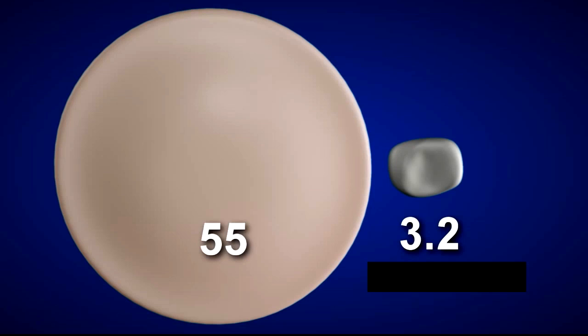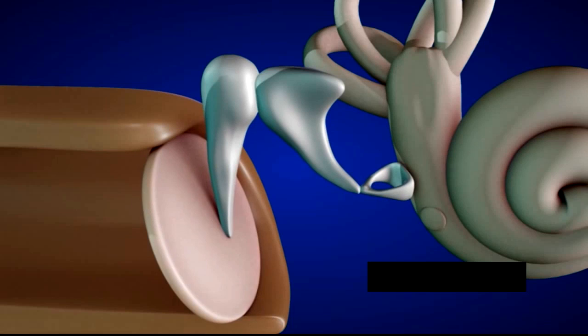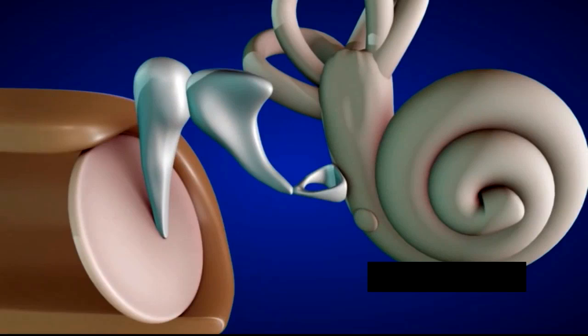This amplified leverage is needed as the stapes needs to cause waves within the liquid inside the cochlea, which requires more force than what is provided from the initial vibration. The cochlea is described as the most complicated part of the ear and is far easier to explain when unraveled from its spiral shape.